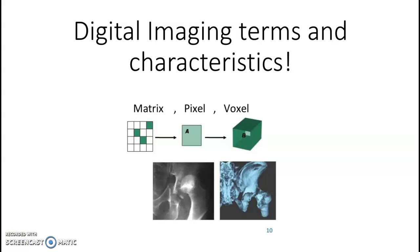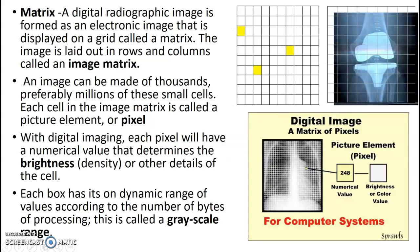I'm going to go over basics of the terms and characteristics. Every image is formed and displayed with a grid, called a matrix. It's laid out in rows and columns — the image matrix. It's made up of pixels, or picture elements. Each pixel has a number value that determines the brightness of the cells, and each box has a range of gray values it can have, usually measured by bytes.